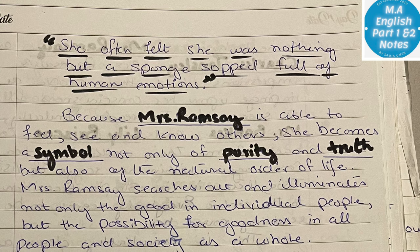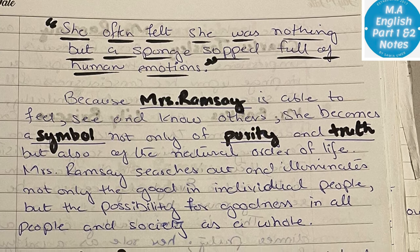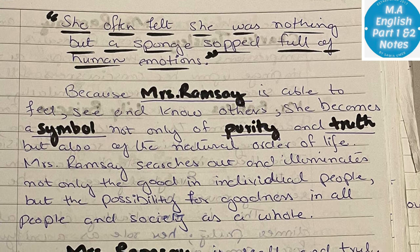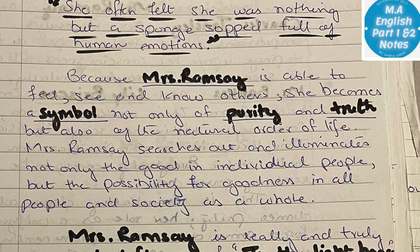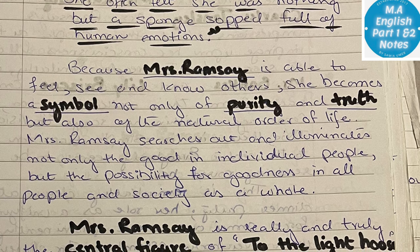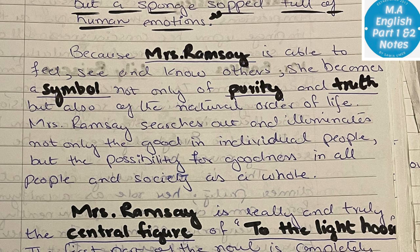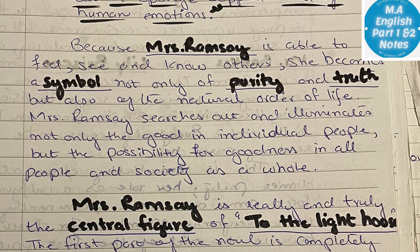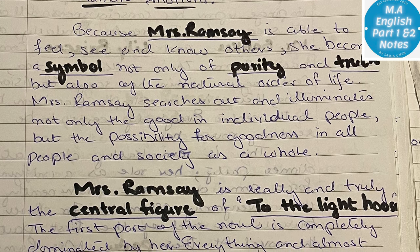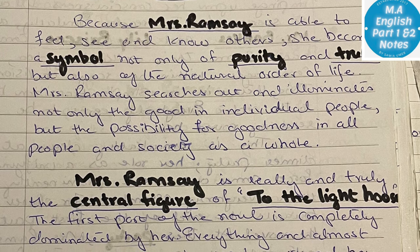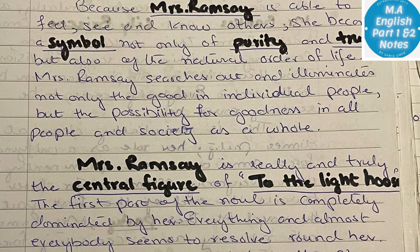She often felt she was nothing but a sponge soaked full of human emotions. Because Mrs. Ramsey is able to feel, see, and know others, she becomes a symbol not only of purity and truth but also of the natural order of life. Mrs. Ramsey searches out and illuminates not only the good in individual people but the possibility for goodness in all people and society as a whole.